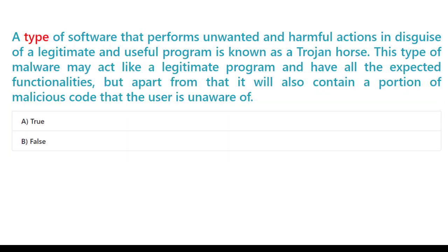A type of software that performs unwanted and harmful actions in disguise of a legitimate and useful program is known as a Trojan horse. This type of malware may act like a legitimate program and have all the expected functionalities, but apart from that it will also contain a portion of malicious code that the user is unaware of. A. True. B. False.